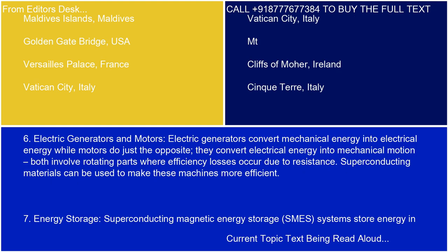Six, electric generators and motors. Electric generators convert mechanical energy into electrical energy, while motors do just the opposite — they convert electrical energy into mechanical motion. Both involve rotating parts where efficiency losses occur due to resistance. Superconducting materials can be used to make these machines more efficient.